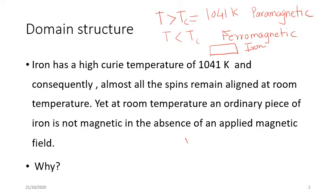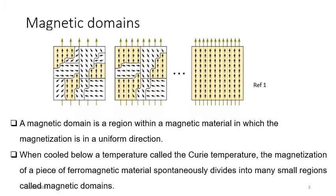To explain this, Weiss gave the theory of domain structure. In a piece of iron there are different domains — regions of space in the material where all the magnetic moment vectors are aligned in one direction. You can see in the figure there are different regions where all the spins are aligned in one direction.